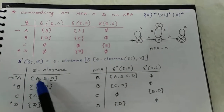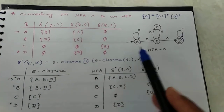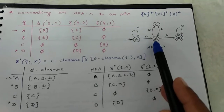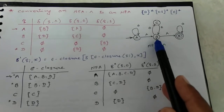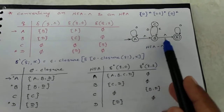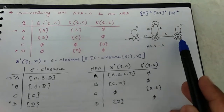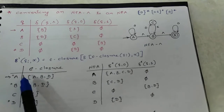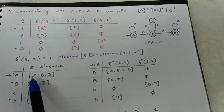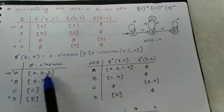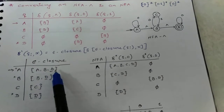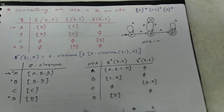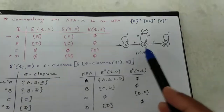A itself, then from A to epsilon we reach at B, and from B to epsilon we reach at D. So epsilon closure of A is {A, B, D}.